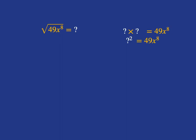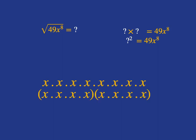We know already that you're going to have a 7 there, because 7 times 7 is 49. But we also want to know what multiplied by itself will give us x to the power of 8. Well, x to the power of 8 is just 8 x's multiplied together. If we split that into 2, we can have 4 x's multiplied together and another 4 x's multiplied together, giving us 8 x's in total. So 7x to the 4 times 7x to the 4 is 49x to the 8, and your square root of 49x to the power of 8 is just 7x to the power of 4.